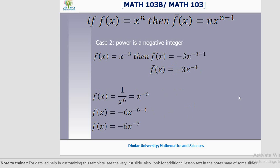Another example: x power minus 3. n equals minus 3 — it is not 3, it is minus 3. Minus 3 minus 1 is minus 4 and the power comes down, so the derivative is minus 3 into x power minus 4. Next question: 1 divided by x power 6 — remember your indices, it is x power minus 6. Bring down the power: minus 6 minus 1 is minus 7, so the derivative is minus 6 into x power minus 7.